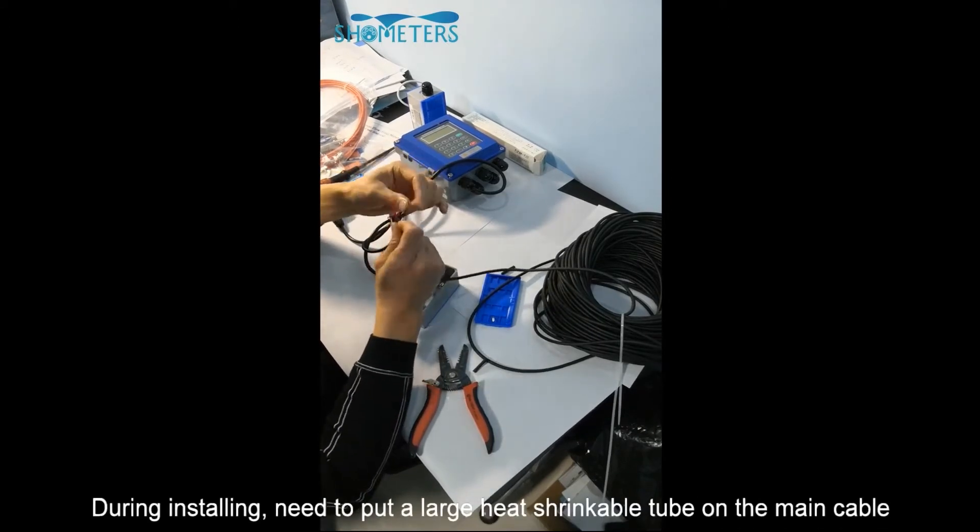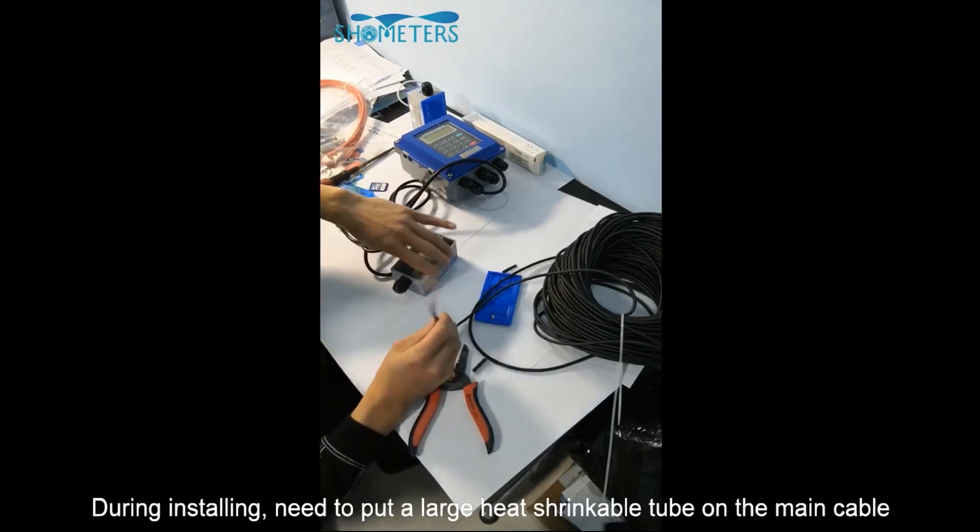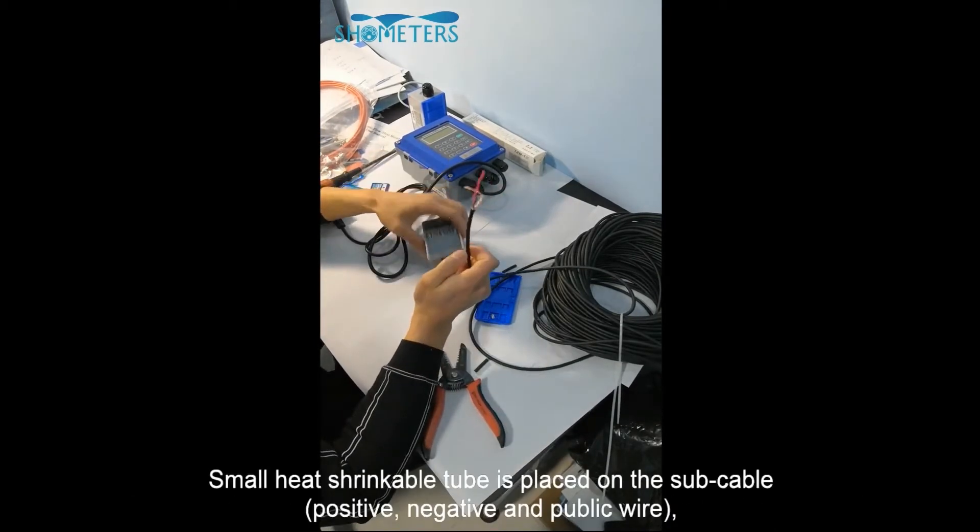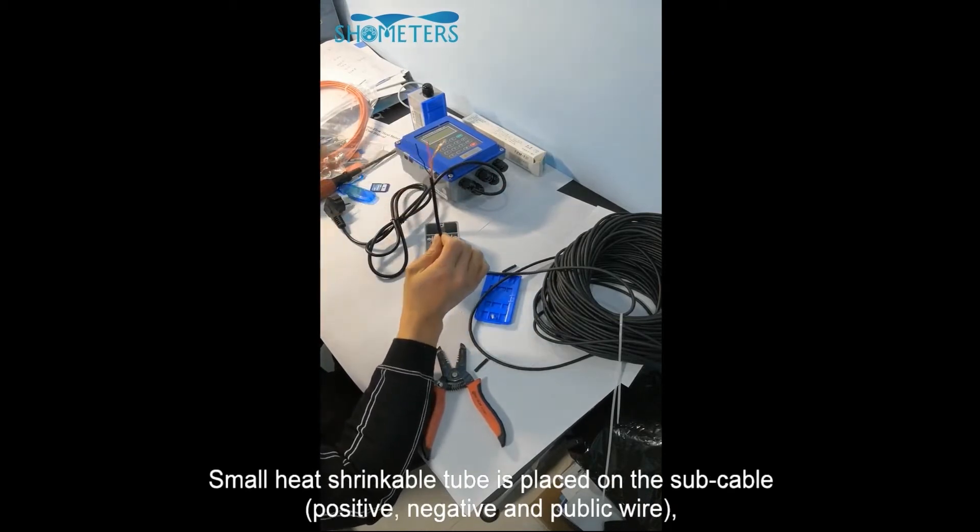During installation, you need to put a large heat shrinkable tube on the main cable. Small heat shrinkable tube is placed on the sub-cable.